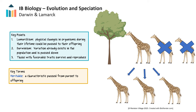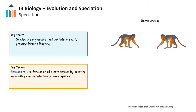Before we look at some of the evidence for evolution, let's first learn about some of the mechanisms by which new species arise, or speciation. Speciation is the formation of new species by the splitting of an existing species to create two or more new species. First, let's make sure we're familiar with the biological definition of the term species, which is a group of organisms who can interbreed to produce fertile offspring.